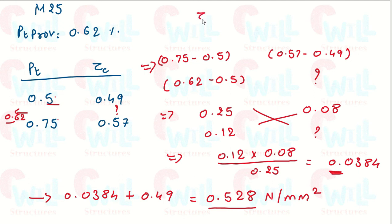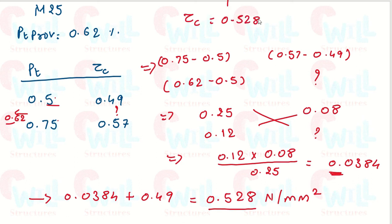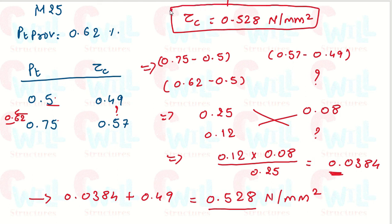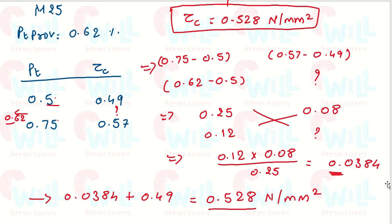So when we have M25 grade of concrete and PT provided is 0.62%, the value of tau c is 0.528 Newton per mm². This is how you do complete interpolation to determine tau c. Note that here the values are in increasing order, so we add. But if the values were in decreasing order — if the tau c value were less than 0.49 — then you would use a minus sign to determine tau c.